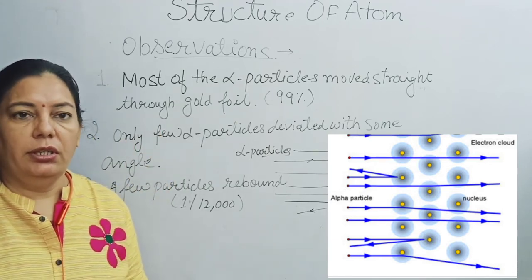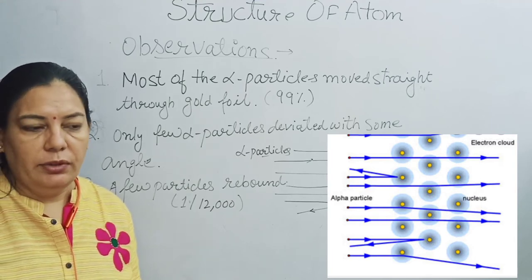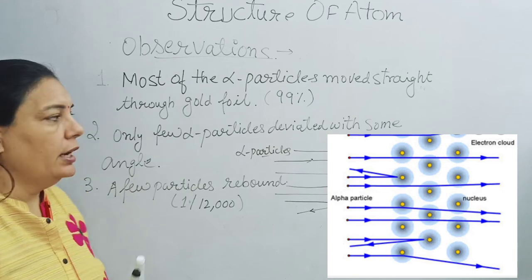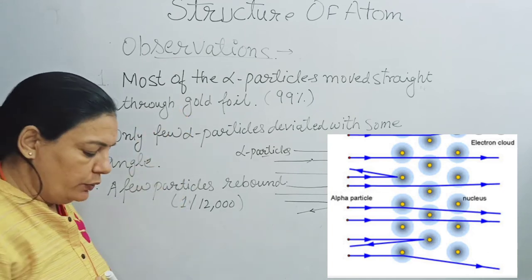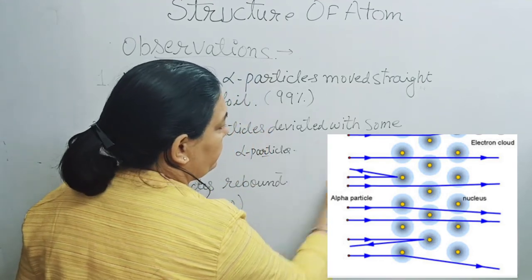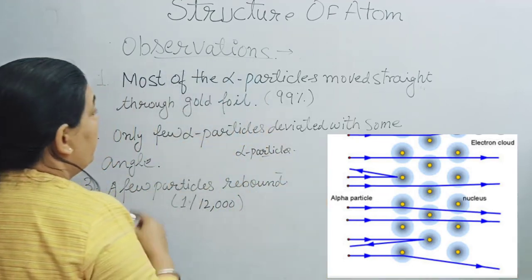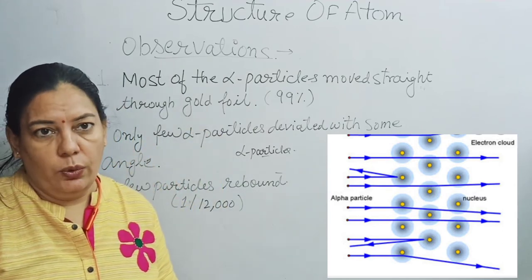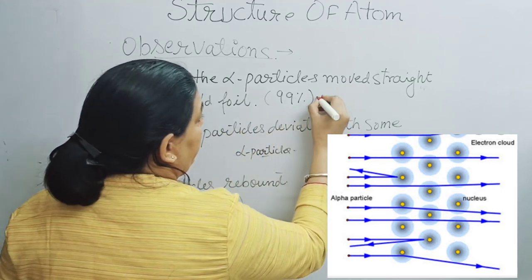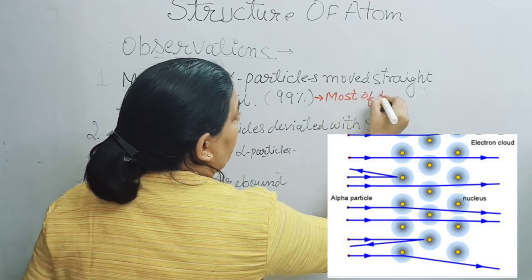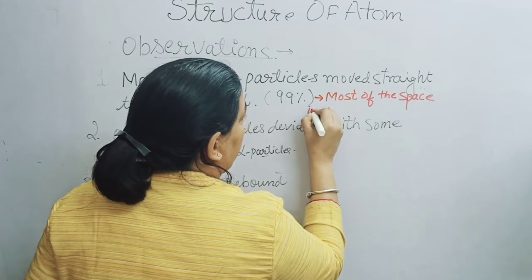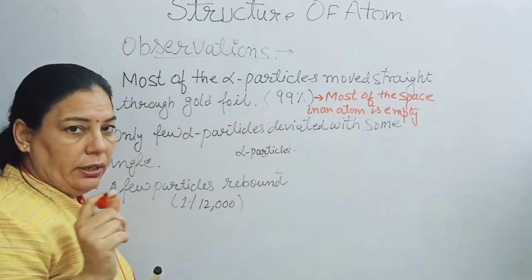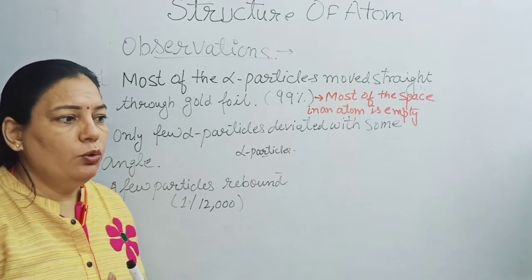When we have observations, we draw conclusions. Let us discuss the conclusions made by Rutherford. First conclusion: since most of the alpha particles moved straight through the gold foil, the conclusion is that most of the space in an atom is empty.